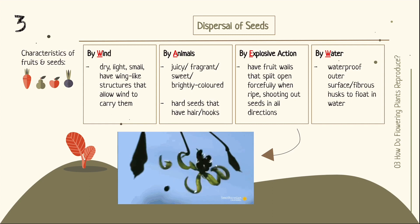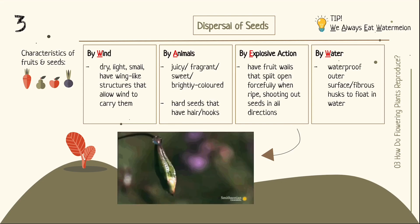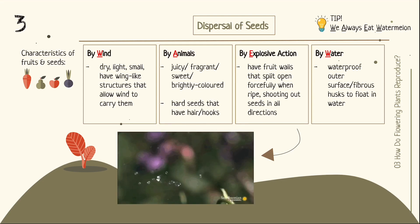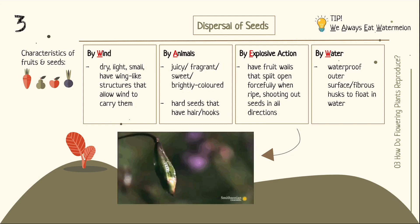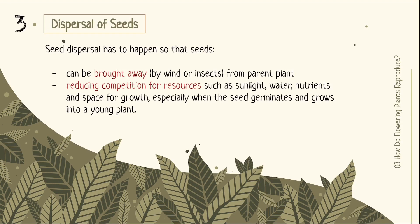Here's a study tip. To remember the four ways of seed dispersal, remember: 'We Always Eat Watermelon.' Notice how the first letter of each word matches the four methods — Wind, Animals, Explosive action, and Water. Seed dispersal has to happen so that seeds can be brought away from the parent plant, reducing competition for resources like sunlight, water, nutrients, and space for growth. This increases the chances of the seed germinating and successfully growing into a young plant.